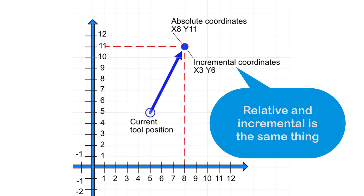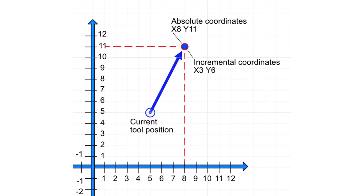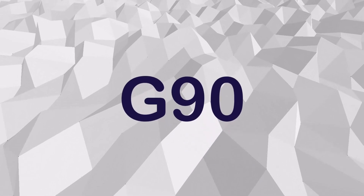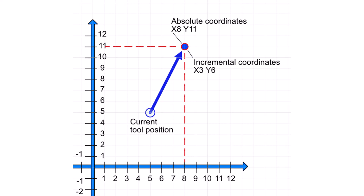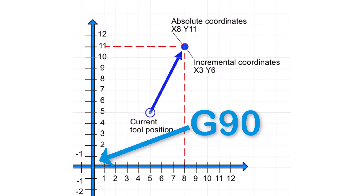The G-code for absolute positioning is G90. When G90 is active, all coordinates given are taken as distances from the machine's zero point.